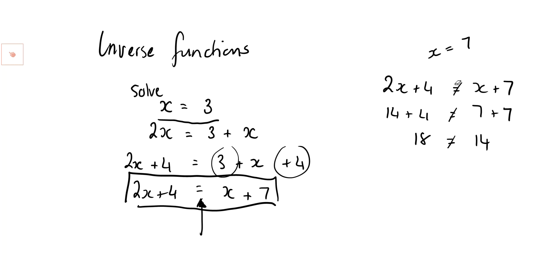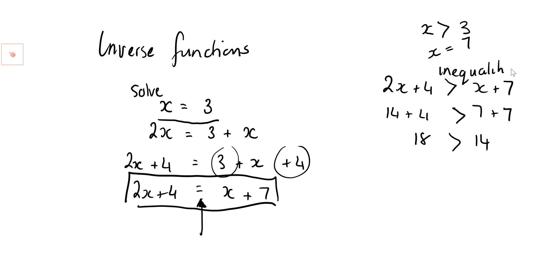That's important because soon I'll be introducing a different symbol: where one side is greater than the other. When x is 7 that's true, but there are other options — when x is greater than 3. We're not just dealing with integers. These are called inequalities — not equal, or can be — so you get the difference. But let's take you back because we've not quite done inverse functions yet.